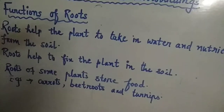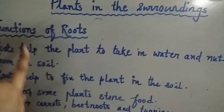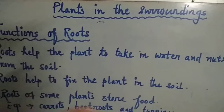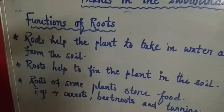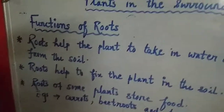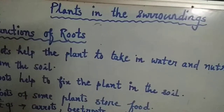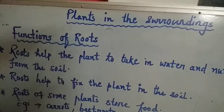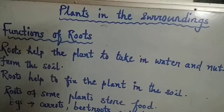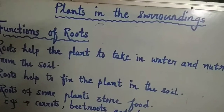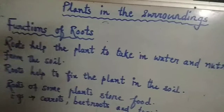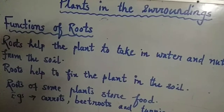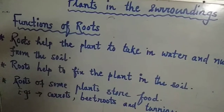The first function — roots help the plant to take in water. As the root is attached to the soil, the roots absorb the water and also nutrients from the soil, and thus give these to the plants.